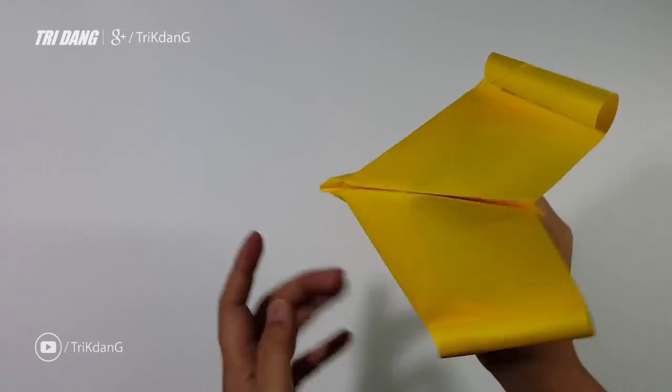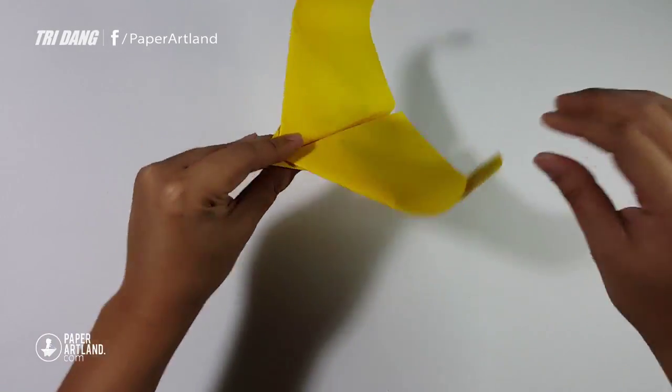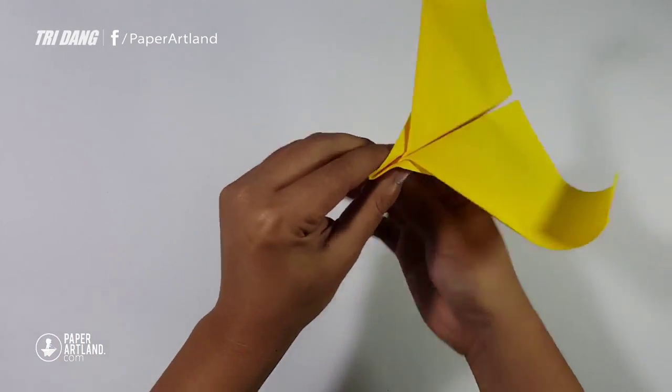And here you go. This is the eagle. You can see the wings are curved up for both sides.